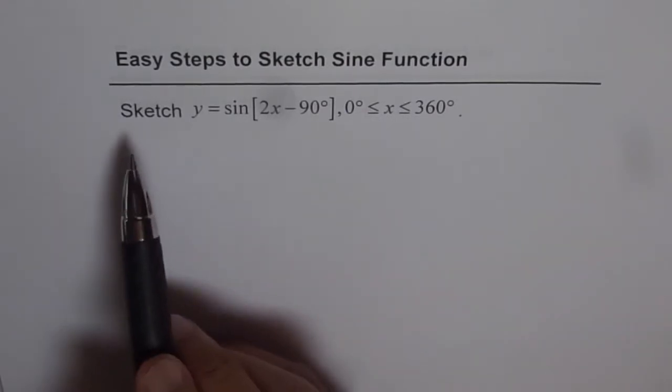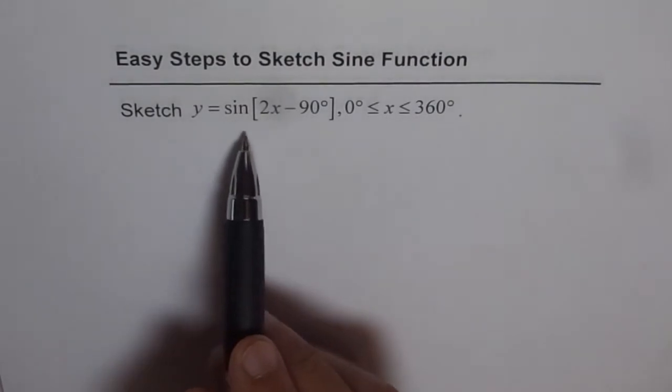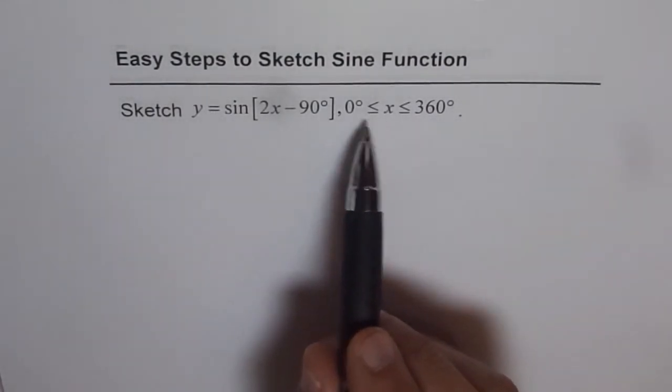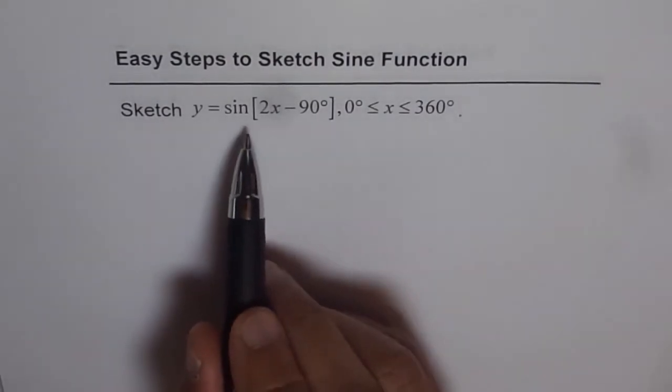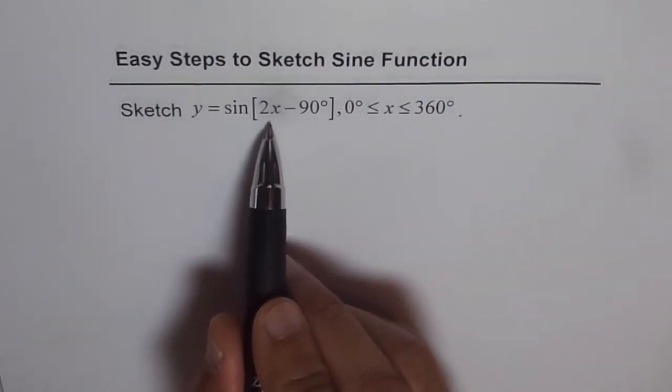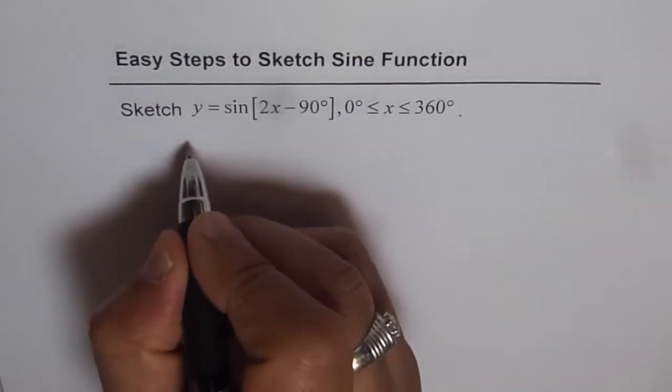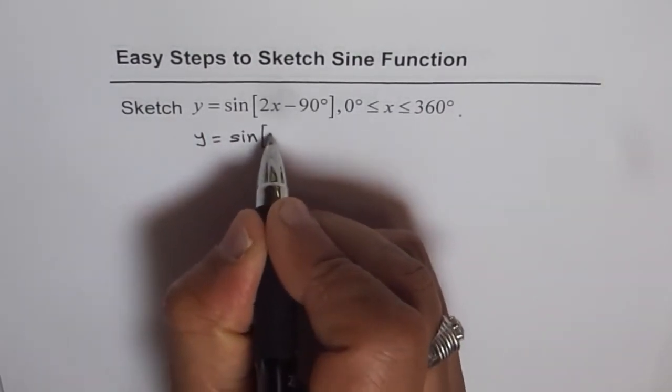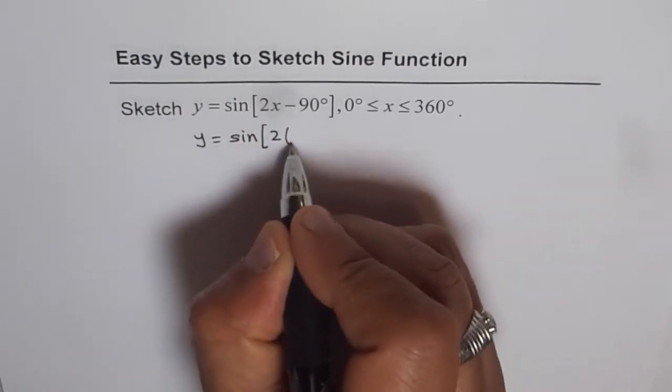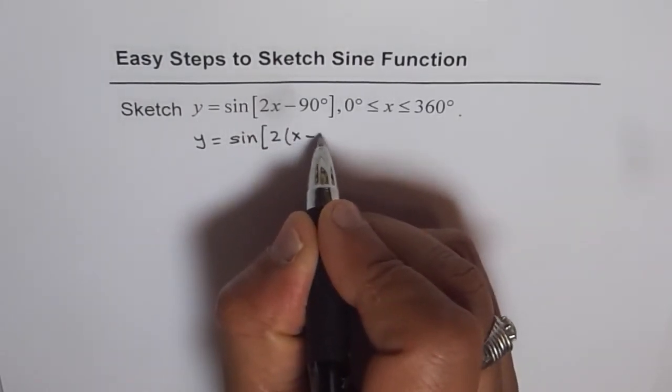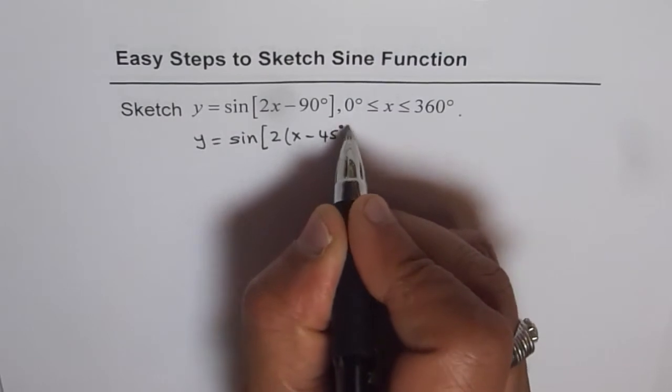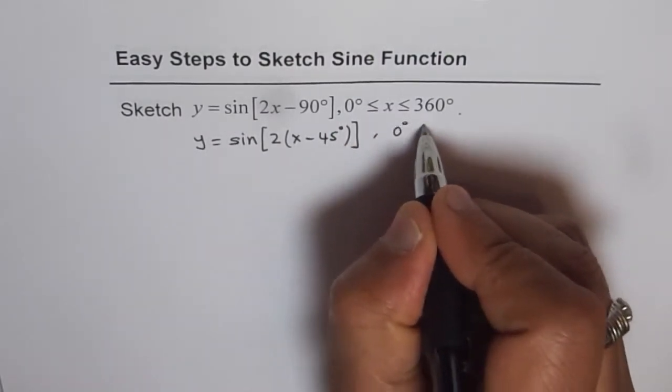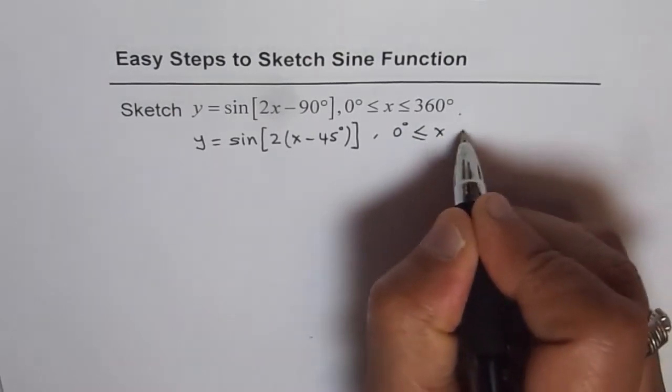The function is sketch y equals sine of 2x minus 90, where x is between 0 and 360 degrees. Now let me first rewrite this equation in factored form. So in that case this equation will be y equals sine 2 times (x minus 45 degrees) and the domain is from 0 degrees to 360 degrees.